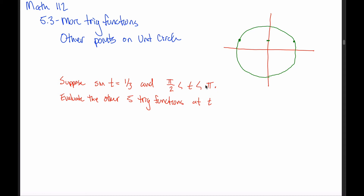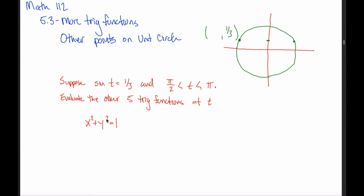Since they tell us t is between pi over 2 and pi — pi over 2 leaves you here, pi leaves you here — it's somewhere in the second quadrant, so we must be talking about this point. If we can figure out the x and y coordinates of this point, we'd be in really good shape. We already know the y-coordinate is one-third, so really all we need is the x-coordinate. To find it, we exploit the fact that this point is on the unit circle, whose equation is x² + y² = 1.